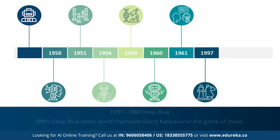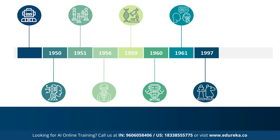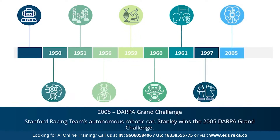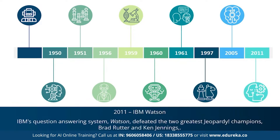In 1997, IBM's Deep Blue beat world champion Garry Kasparov in chess. 2005 marks the year when an autonomous robotic car called Stanley won the DARPA Grand Challenge. In 2011, IBM's question-answering machine Watson defeated the two greatest Jeopardy champions, Brad Rutter and Ken Jennings. That was a brief history of AI.